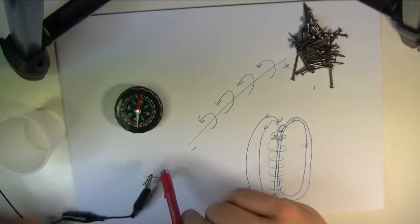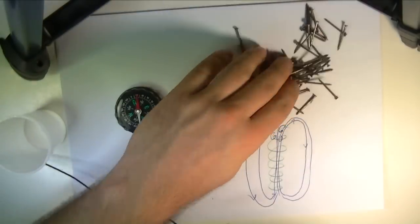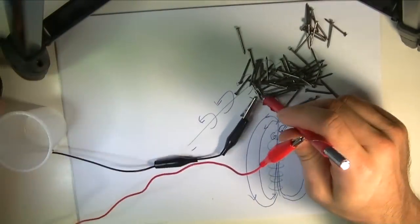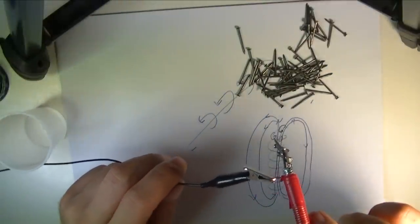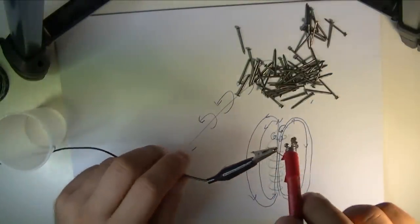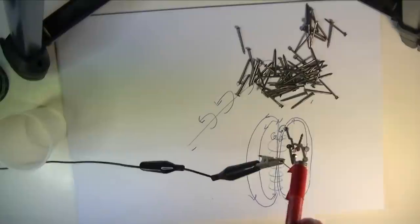All right. As you can see, the compass is already turning, which is a good sign, and maybe it'll be strong enough to pick up a nail or two. Oh, yeah. There it is. And as soon as I disconnect it, the nails are going to drop.